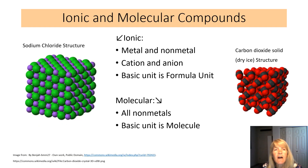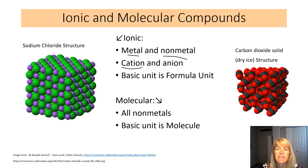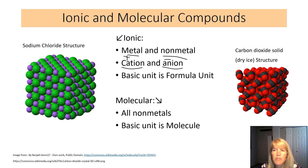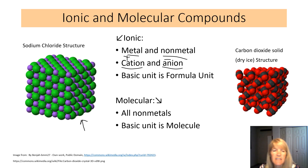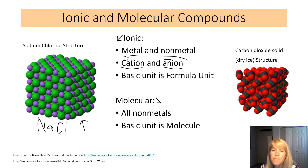Looking at compounds: ionic compounds consist of a metal and a nonmetal together, forming ions. The positive ion is the cation and the negative ion is the anion. We refer to the basic unit as a formula unit, not a molecule, because ionic compounds form a crystal structure. You don't have individual sodium and chloride pairs — every sodium is surrounded by chlorides and vice versa. The simplest unit is NaCl, but individual NaCl molecules don't really exist.